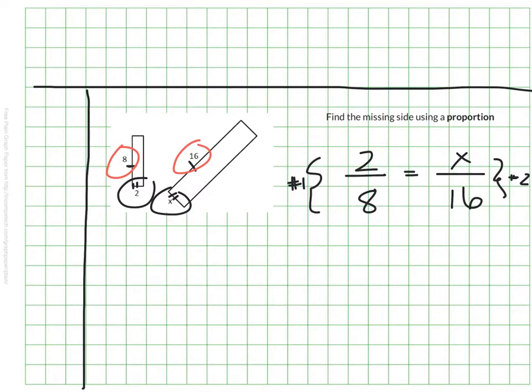And since I know that these need to be equivalent and proportional, I know that whatever I multiplied 8 by to make 16 is also what I need to multiply my 2 by. And this is my scale factor. This is a fairly friendly example, so I can tell pretty quickly that 8 times 2 makes 16.